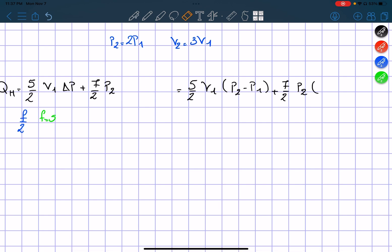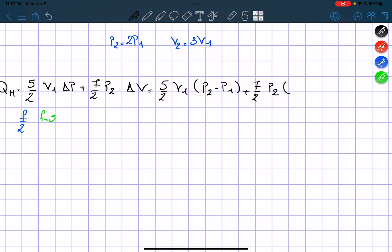Here I already wrote V2 minus V1, it's supposed to be delta V.